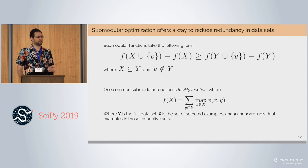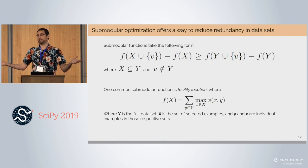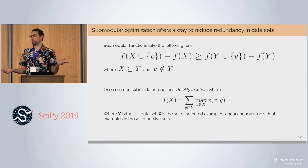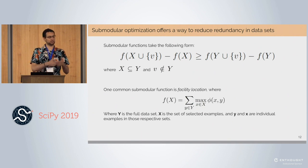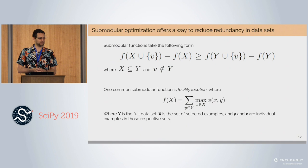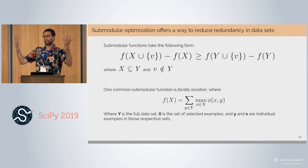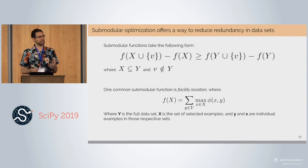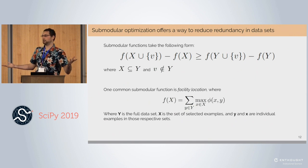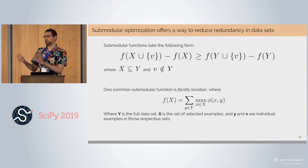One of the most common submodular functions is facility location, which arose literally from the task of locating facilities — determining where to put a next facility in an underrepresented region. Facility location works on pairwise similarities: you take two data points, calculate the similarity between them, and return a set highly similar to as many other points as possible. You can think of this like k-means — you select centroids centrally located amongst the data so all points are well-served. It differs in that facility location actually selects real data points, and it's a greedy rather than iterative approach.